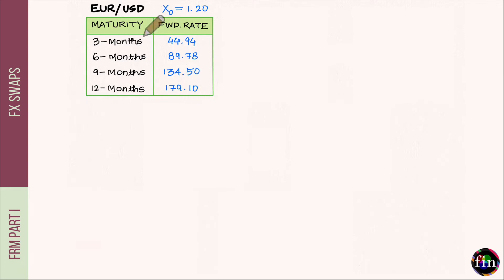As an example, we will work with EUR/USD as our currency pair. Euro is the base currency and USD is the quote currency. Let the current spot exchange rate be X0 equals 1.2, meaning 1.2 USD per unit euro. I have also tabulated the forward exchange rates for EUR/USD for a number of maturities. Forward exchange rates are quoted in terms of points. To get the actual forward rate, apply the correct number of points for the chosen maturity on top of the spot exchange rate.